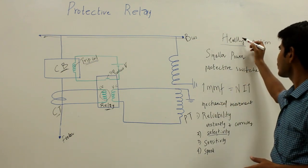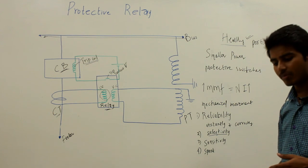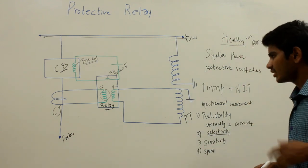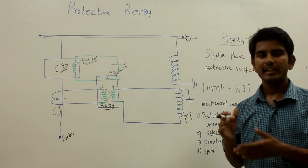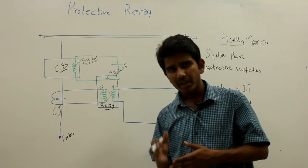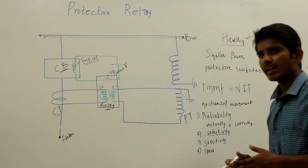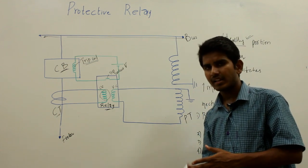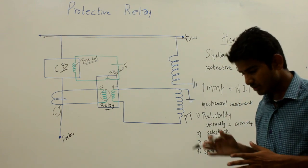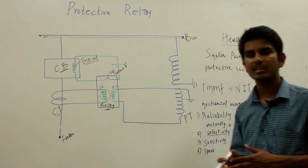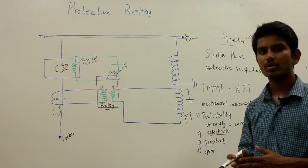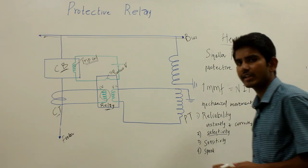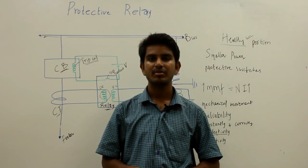If the relays associated with the healthy portion operate first, it results in undesirable operation of the relays in the power system. Conversely, if the relays at the faulty portion do not operate in time due to some defect, the relay associated with the next healthy portion should operate as backup and isolate the faulty portion. So the relays should not be so fast as to cause undesirable operation, nor so slow as to cause damage to equipment. This is the operational principle and the functional requirements of the protective relay used in power system protection.